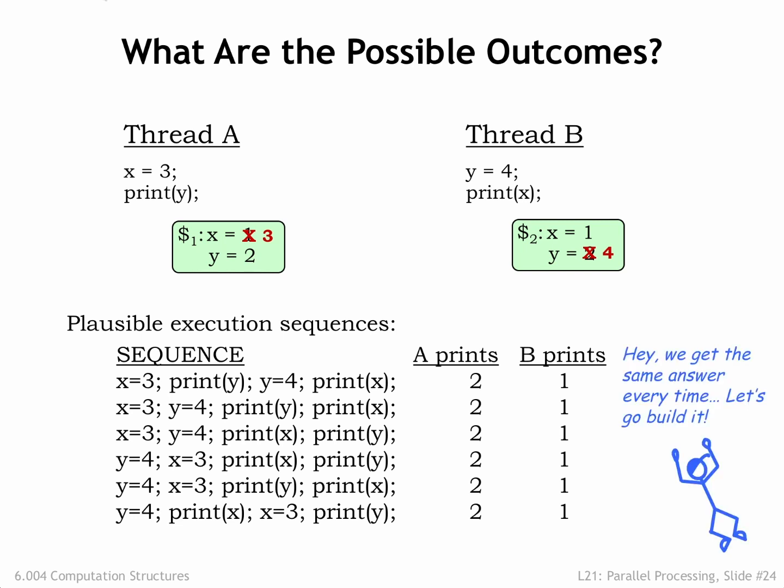Hardware engineers would point to the consistent outcomes and declare victory. But closer examination of the final system state reveals some problems. After execution is complete, the two cores disagree on the values of X and Y. Threads running on core 0 will see X equals 3 and Y equals 2. Threads running on core 1 will see X equals 1 and Y equals 4. Because of the caches, the system isn't behaving as if there's a single shared memory. We can't eliminate the caches since that would cause the average memory access time to skyrocket, ruining any hoped-for performance improvement from using multiple cores.